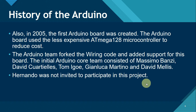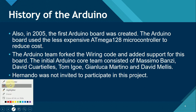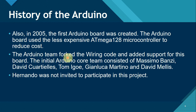The Arduino board used the less expensive ATmega128 microcontroller to reduce cost. The Arduino team forked the wiring code. The term 'fork' is used for open source platforms — meaning you duplicate a design and then customize it for your own needs. The initial Arduino core team consisted of Massimo Banzi, David Quartielles, Tom Igoeg, Gianluca Martino, and David Melis. Unfortunately, Hernando was not invited to participate in this project.